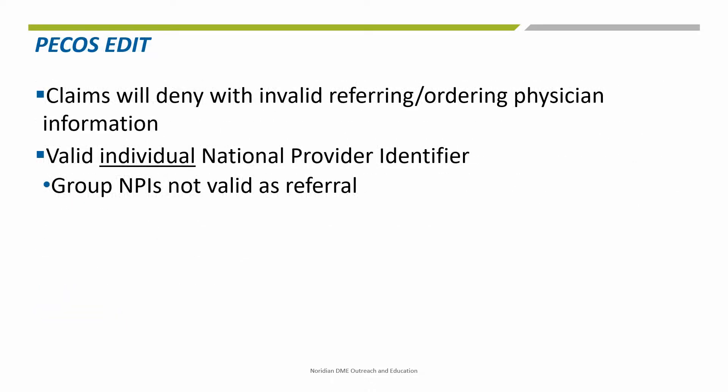Per CMS direction, the Medicare contractors utilize denial edits to check DMEPOS claims for a valid individual national provider identifier and deny the claim when this information is invalid. Submitting a group NPI is invalid. Suppliers are encouraged to either check with the referral source or verify on the NPI registry to ensure a group NPI is not submitted on the claim.